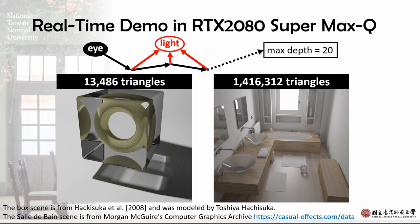Our path tracing starts from the eye point with a maximum depth of 20. Each vertex of the eye path also connects to a randomly selected light. Now we show the real-time demo.